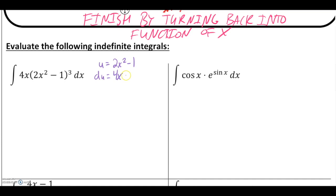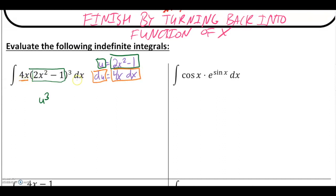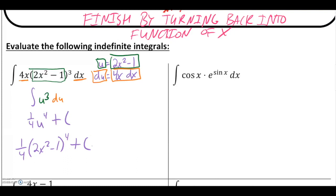We think of this similarly to implicit differentiation — it's times the derivative of the x variable, so we include a dx at the end. Substituting into the original integral: u itself equals 2x squared minus 1, so that expression becomes u to the third power. And du equals the entire 4x dx, so those terms substitute out and get replaced with du. Integrating u cubed with respect to u gives u to the fourth with one-fourth out in front, plus c. Turning back into a function of x: one-fourth times the quantity 2x squared minus 1, to the fourth power, plus c.